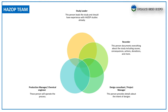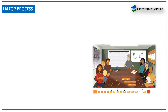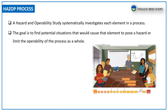The team also includes a production manager or chemical engineer, who will operate the process; a specialist, who provides specialized technological knowledge about the process; and a maintenance manager, electrical engineer, and instrument engineer, who offer information and details about maintenance of the equipment and other machinery.